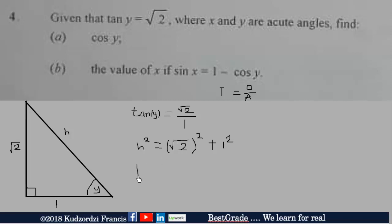So we have hypotenuse squared is equal to √2 squared, which is 2, plus 1 squared, which is 1.